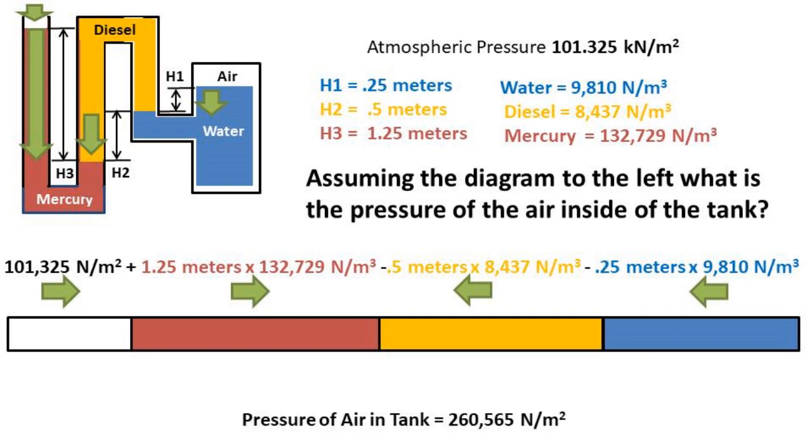So after adding and subtracting all of the pressure values, we get that the air inside the tank has a pressure of 260,565 newtons per meter squared.